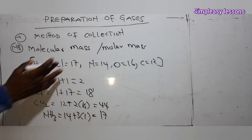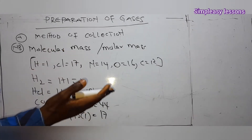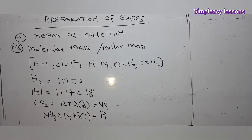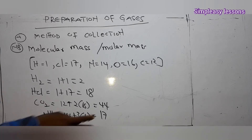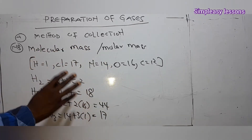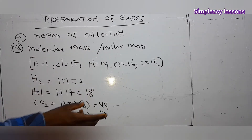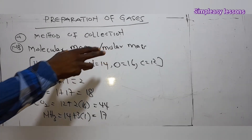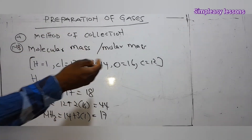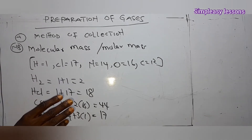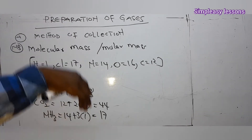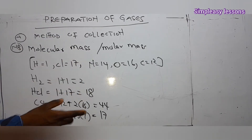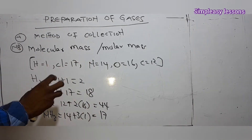For NH₃: nitrogen is 14 and three hydrogens give 3, so the molar mass is 17. Now, why am I introducing molar mass while we are looking at collection of gases? Because if you know the molar mass, you can determine the method of collection — whether it will be upward delivery or downward delivery, upward displacement of air or downward displacement of air.